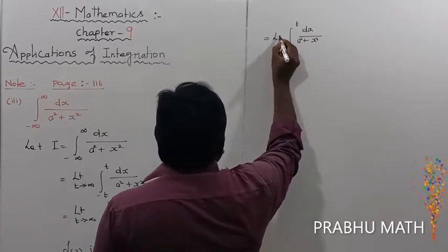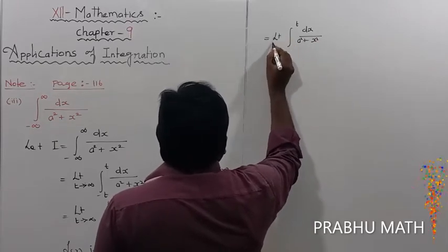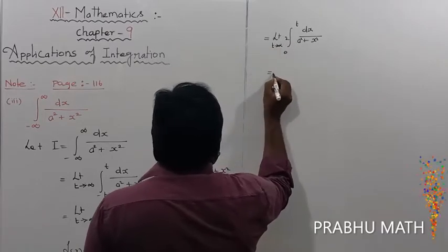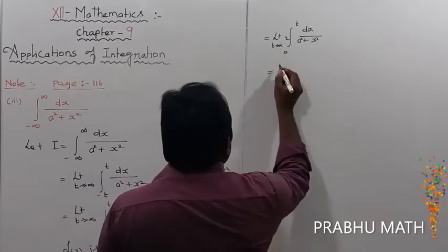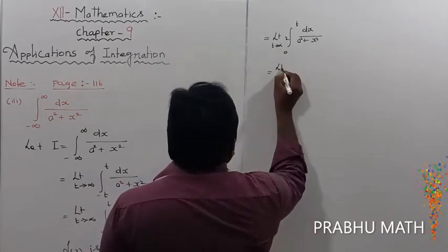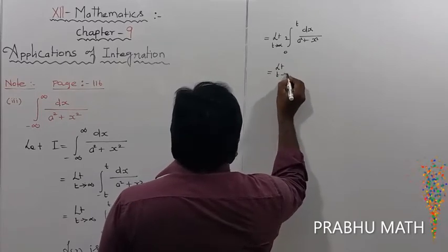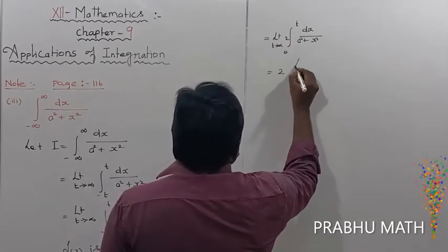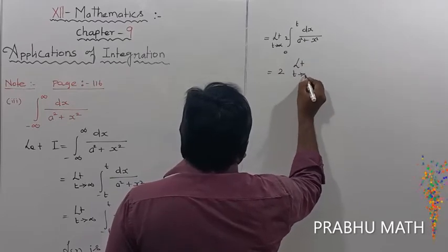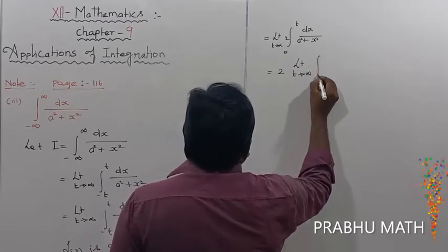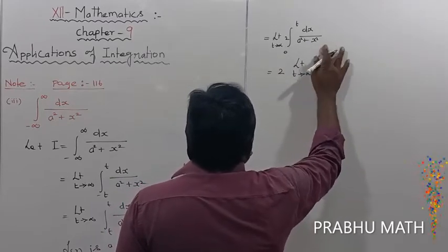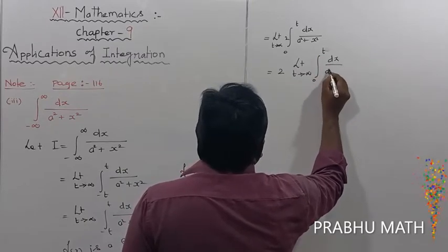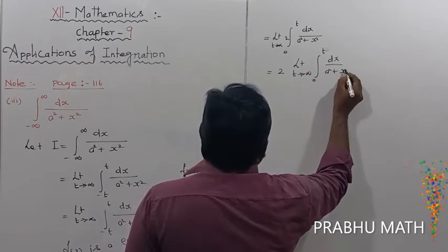So this gives us the limit as t tends to infinity. Since 2 is a common value, we take 2 outside: 2 times the limit as t tends to infinity of the integral from 0 to t of dx divided by a squared plus x squared.